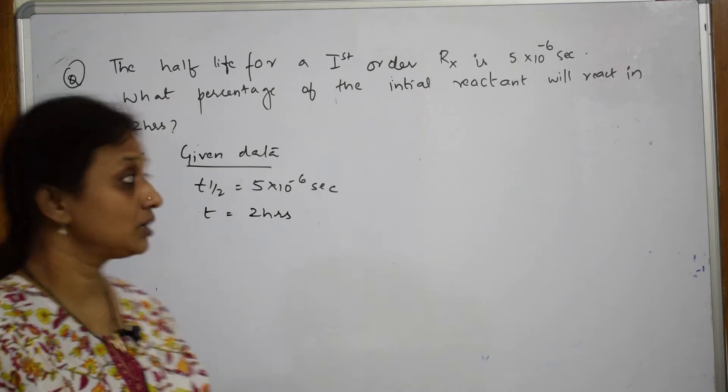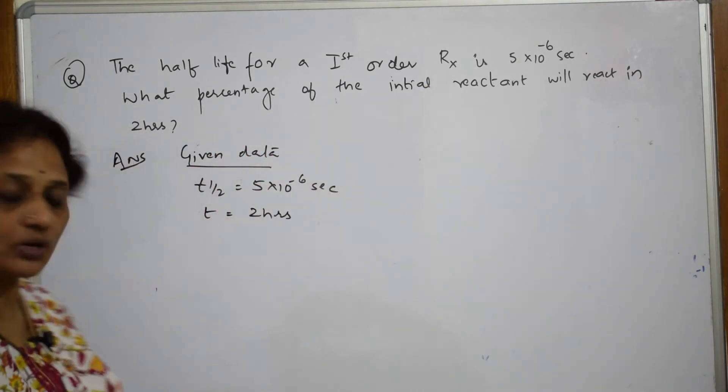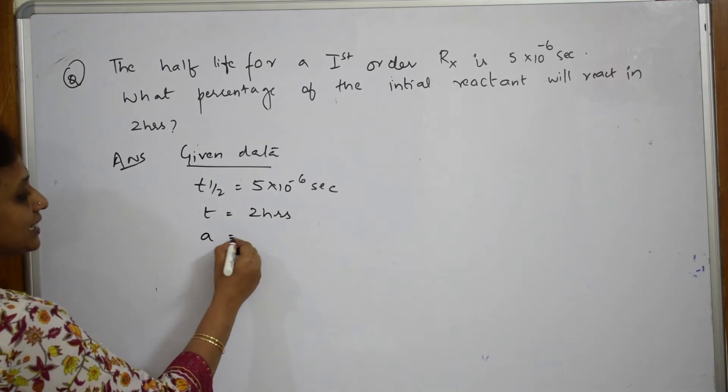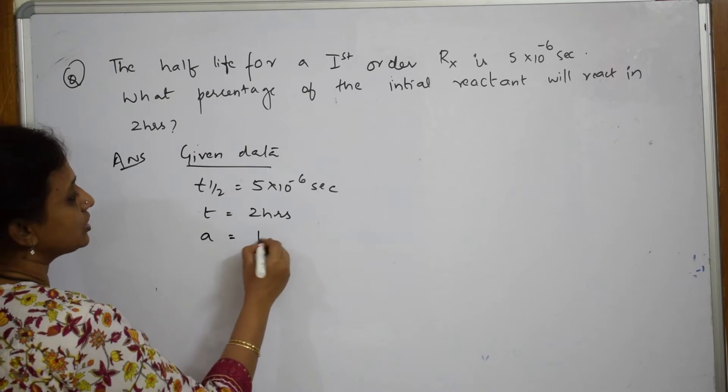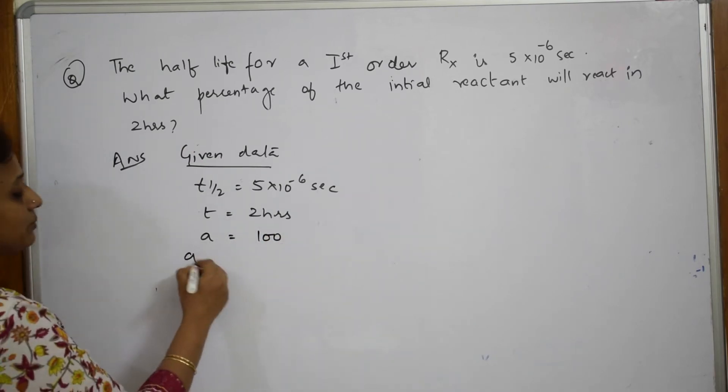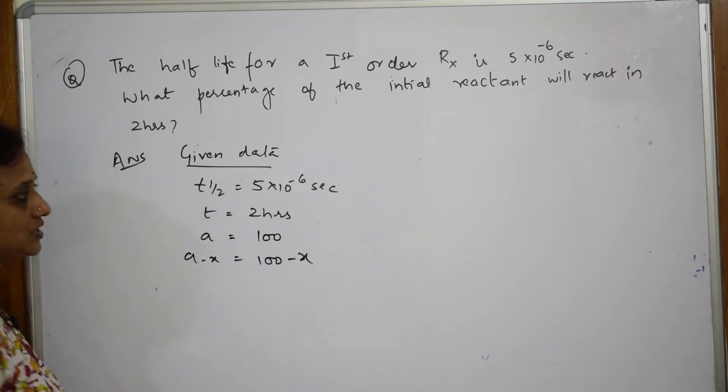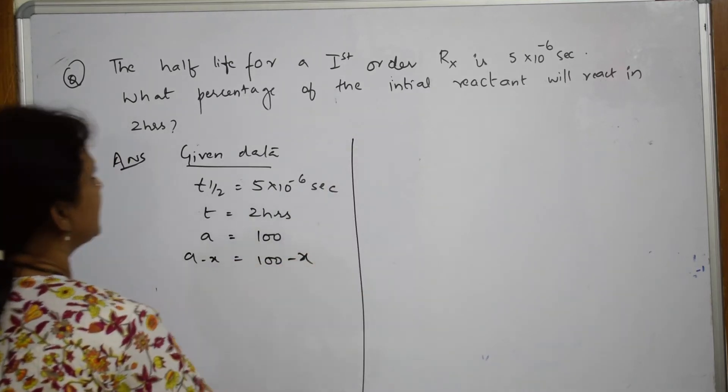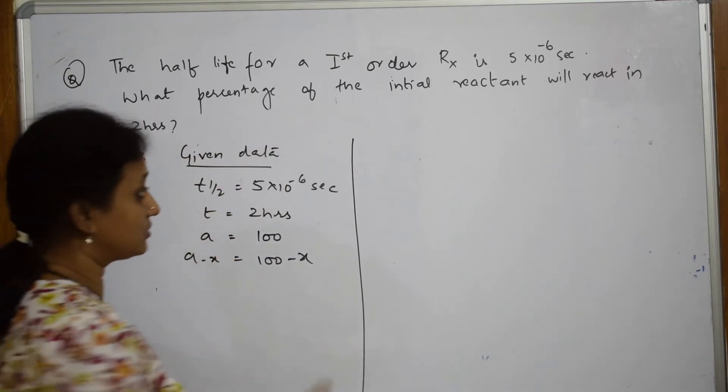What should I find out? What percentage of initial reactant? What is initial reactant? The initial reactant I take as A. If I assume the initial reactant to be 100 because they are given in percentage, A minus x would be 100 minus x. What should I find out? I have to find out this quantity x.